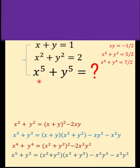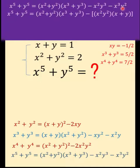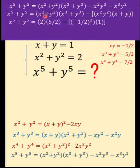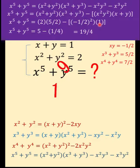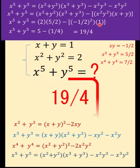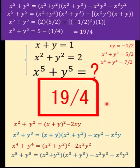We are now ready to find x to the fifth plus y to the fifth. This part here can be simplified because there's a common factor of x squared y squared. Substituting the values we have so far: x squared plus y squared equals 2, x cubed plus y cubed equals five halves, minus x squared y squared which is negative one half squared, and x plus y equals 1. This gives us a value of 19 over 4.